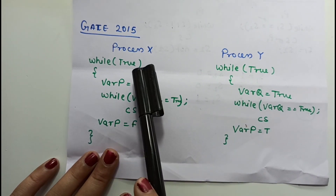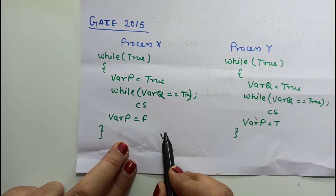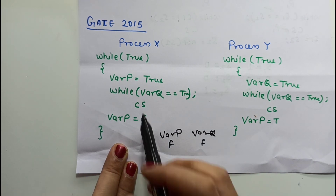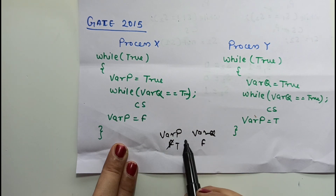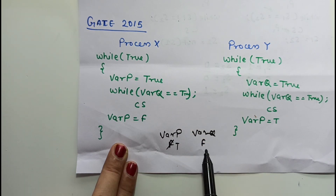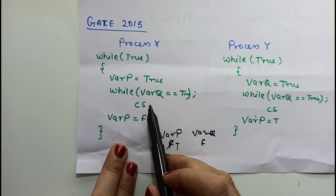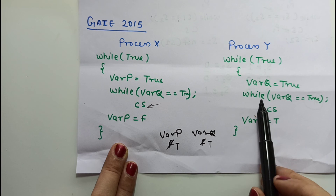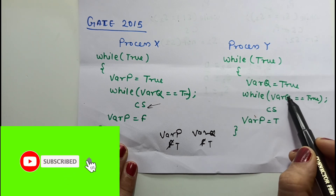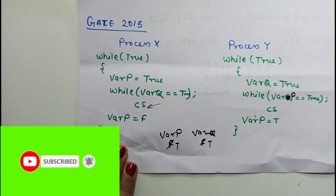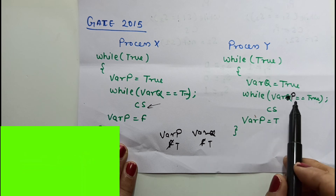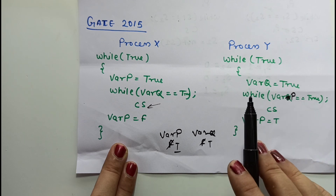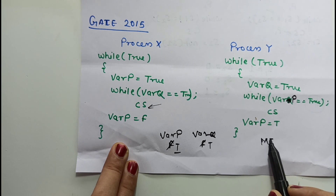Let's check mutual exclusion. When process X wants to execute, it sets var p to true, then checks if var q is true — var q is false, so X enters its critical section. Now if process Y also wants to execute, it sets var q to true and checks whether var p is true. Var p is true, so Y waits. Only one process is executing the critical section at a time — mutual exclusion is guaranteed.